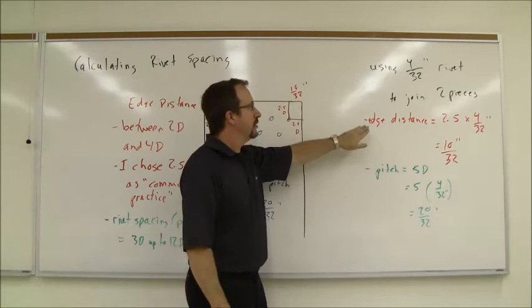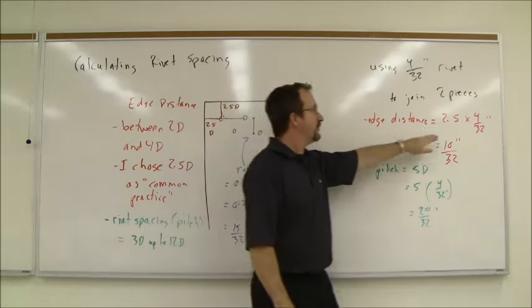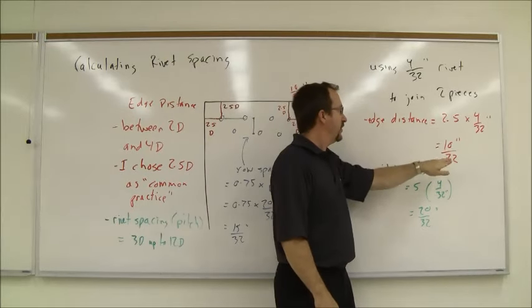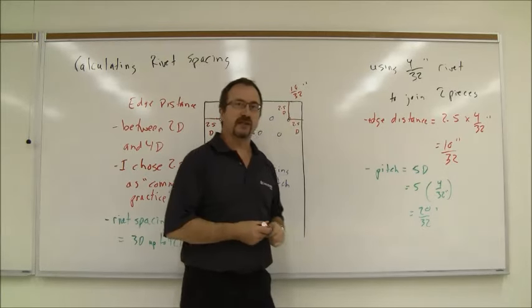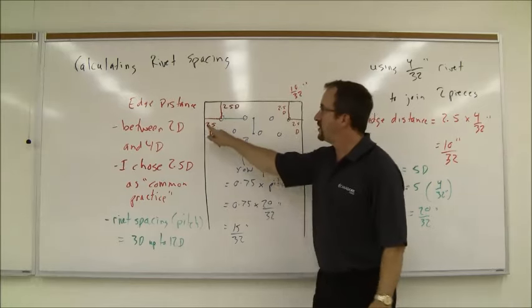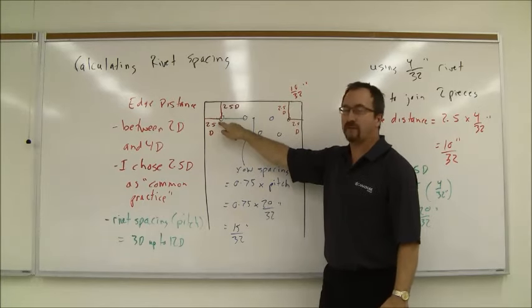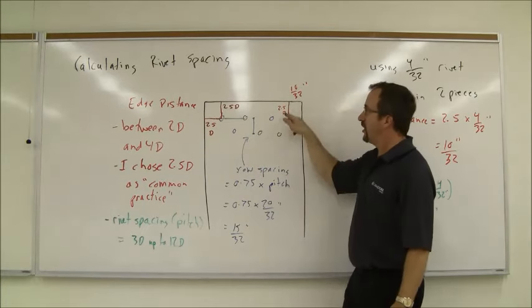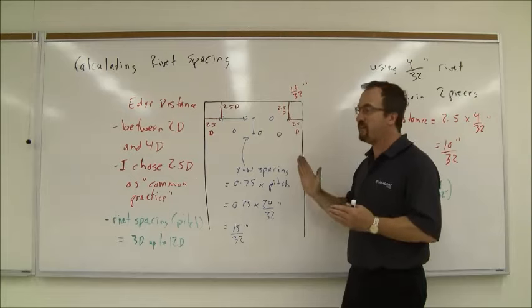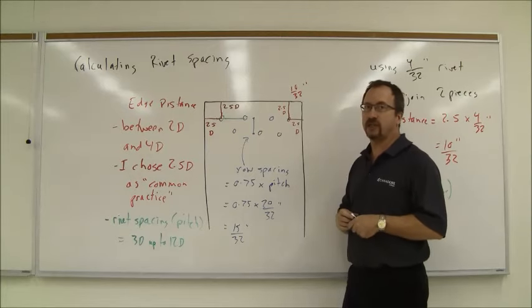So what I'm going to do is calculate the edge distance by taking 4/32nds times 2.5, which gives me 10/32nds. So I must be 10/32nds of an inch off the side, off this edge, off this edge, and off this edge. I can't get closer than that because that's what I chose.